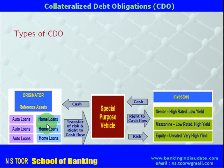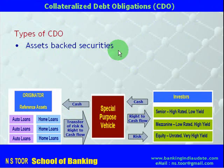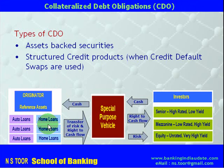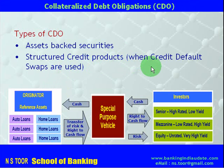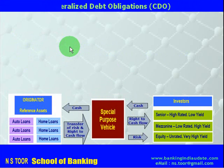CDOs are of two types. The first type is asset backed securities. The second type is structured credit products, which arise when credit default swaps are used. When credit default swaps are used, the CDOs become structured credit products; otherwise they are asset backed securities.